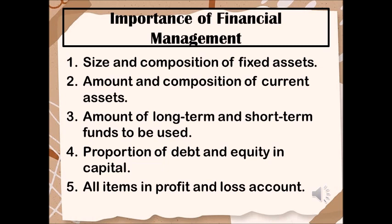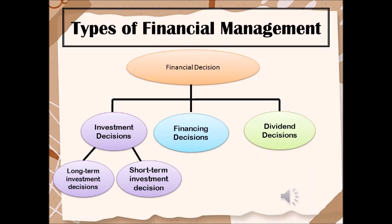Types of financial management. Financial management is mainly concerned with the following decisions. First, investment decisions: a firm must decide where to invest funds so that it can earn maximum returns. Such decisions are known as investment decisions and can be classified as long-term and short-term investment decisions. Long-term investment decisions refer to investments such as investment in new fixed assets, new machinery, or land. They are also known as capital budgeting decisions.